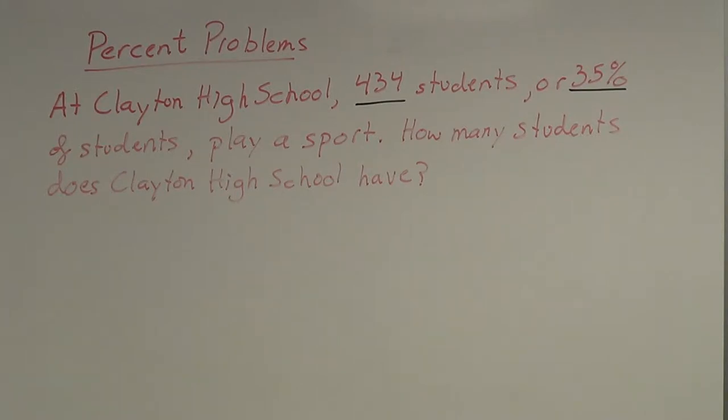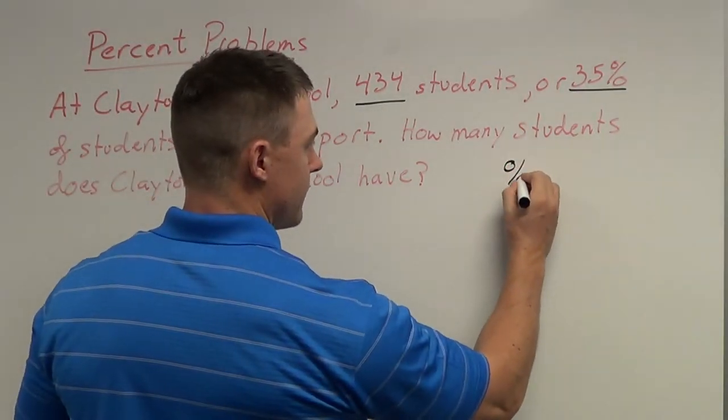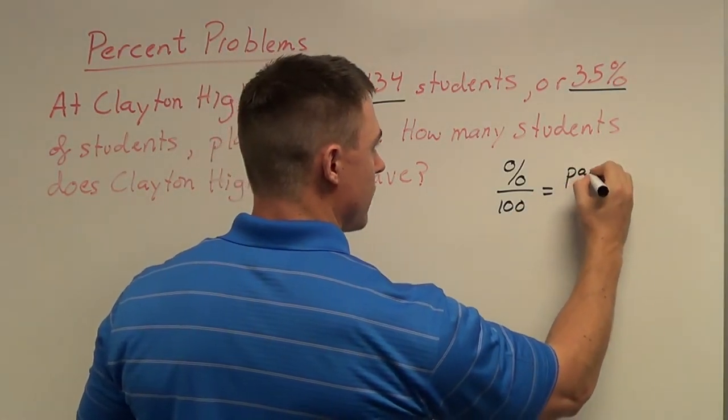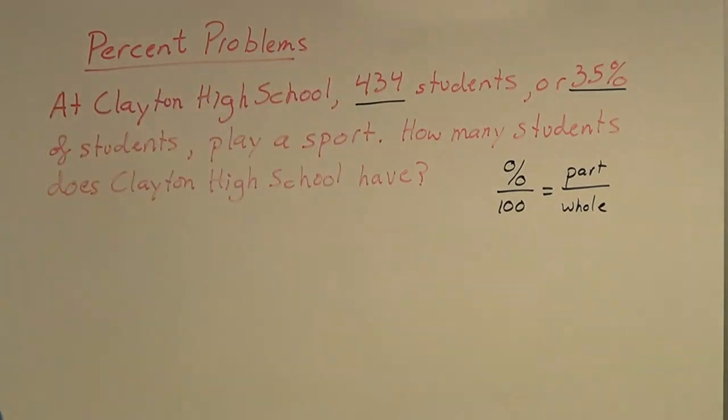Just like last time, since this is a percent type of problem, I'm going to use my handy little formula. Percent over 100 is equal to part over whole. This proportion helps us to solve percent problems. This is one of the easier ways to help us solve percent problems.